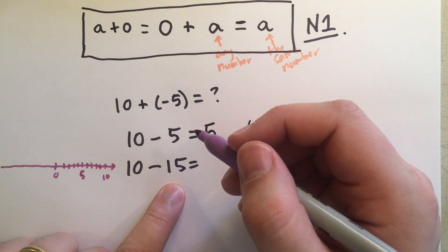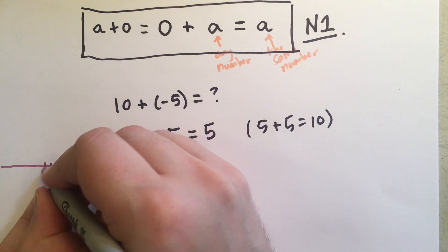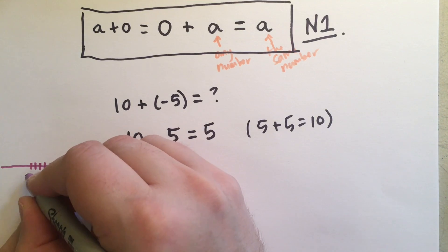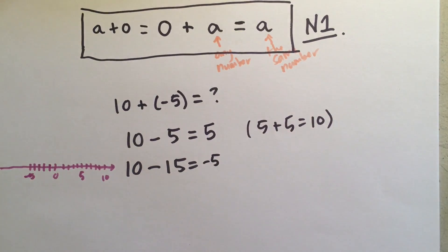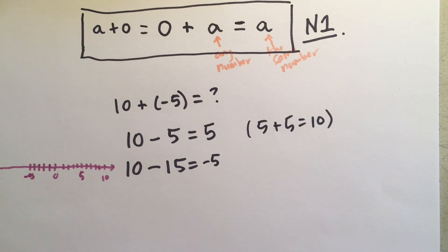So, let's move to the left 15 units. So, we move 10 units. We're back at the origin. 11, 12, 13, 14, 15. Well, that's minus 1, minus 2, minus 3, minus 4. That's minus 5. So, the answer, 10 minus 15, is negative 5. That doesn't sound very complicated, does it?